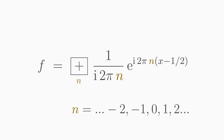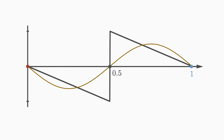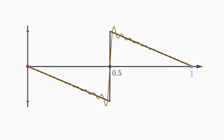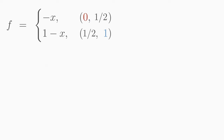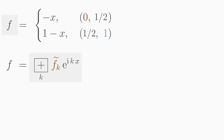With this Fourier series for the sawtooth function, we get two advantages. First, we can stop the summation at a certain n value and get an arbitrarily good approximation — for example, summing up to n = 1, or an even better approximation summing up to n = 20. The second advantage is that, since we have determined the Fourier coefficients, we know which building blocks the sawtooth function is composed of. This breaking down of a function into individual components is called Fourier analysis, which we will take a closer look at in another video.